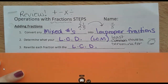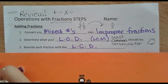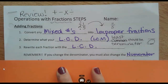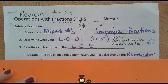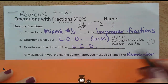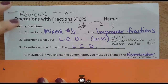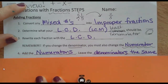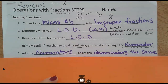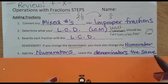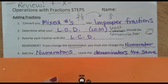Figure out the LCD in step 2, then step 3: actually rewrite each fraction with that common denominator. Important hint — if you change the denominator, you must also change the numerator. Anytime you rewrite a fraction and the bottom number changes, you also have to change the top number. After rewriting with common denominators, add the numerators — the top numbers — and leave the denominators the same. We don't add the two bottom numbers; they just stay the same.